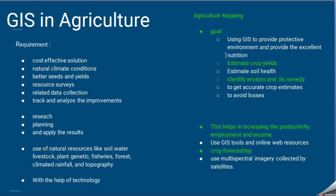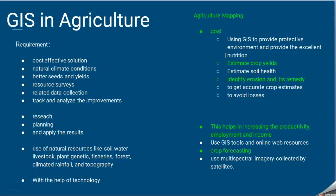To achieve this, we use natural resources like soil, water, livestock, plant genetics, fisheries, forest, climate, rainfall, and topology — all studied with the help of GIS. For example, in agriculture mapping, the goal is to provide a protective environment and excellent nutrition for crops. This includes estimating crop yields, assessing soil health, identifying erosion problems, and finding their remedies.